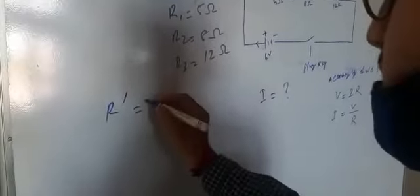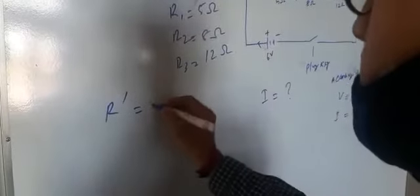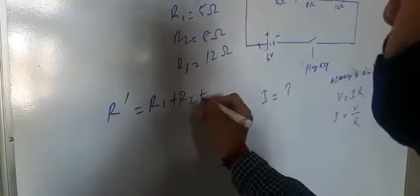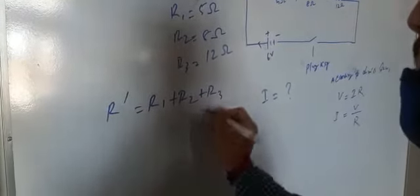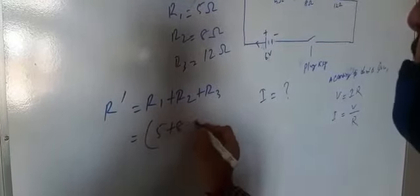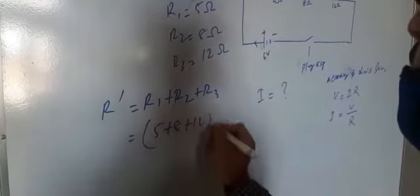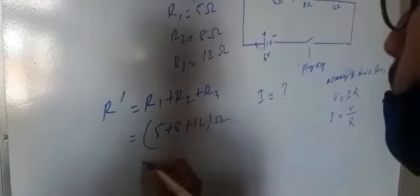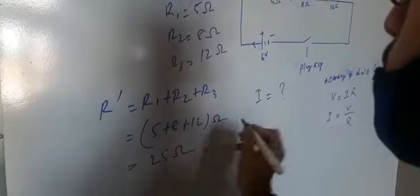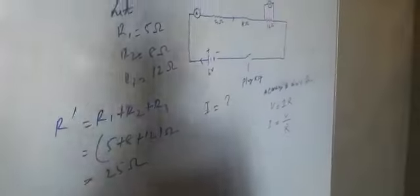The total equivalent resistance R dash equals R1 plus R2 plus R3, that means 5 plus 8 plus 12 ohms. 5 plus 8 is 13, plus 12 is 25 ohms. So the total equivalent resistance is 25 ohms.